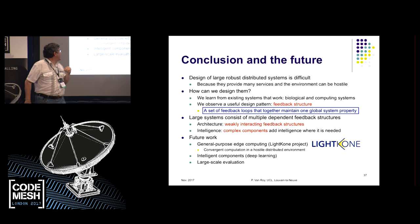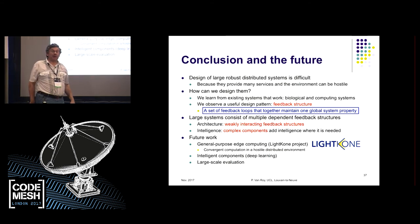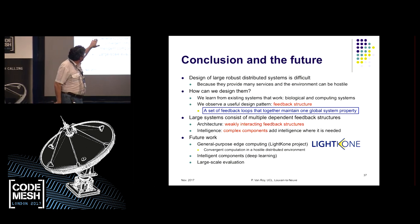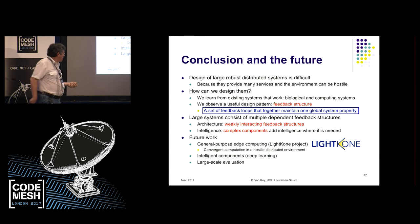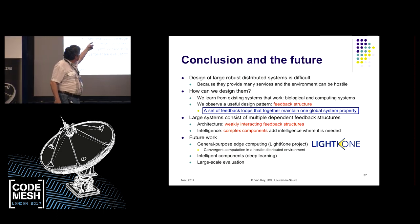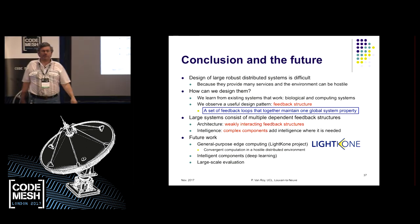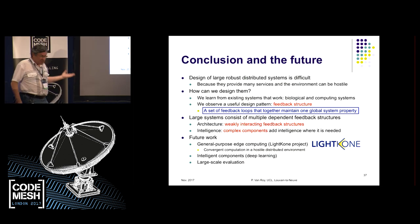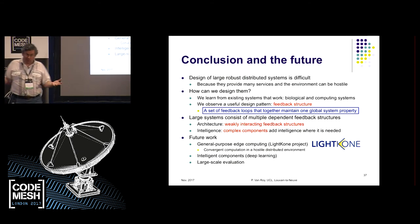If you want smartness, you add complex smart components where you need them. This design approach started in the Selfman project. We are still working on large-scale distributed computing — it's not really a solved problem yet. We're working on edge computing, which is very interesting because the edge is a very hostile environment: it's dynamic, phones like to be offline, there are low-power and unreliable networks. We're also noticing smart components more — deep learning is coming. We're also doing large-scale evaluation. I hope you find feedback structures an interesting pattern for structuring large systems and making them more robust.